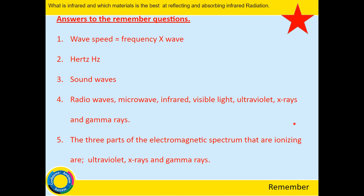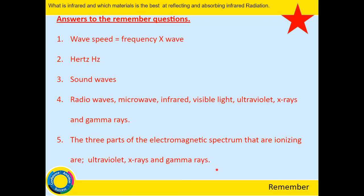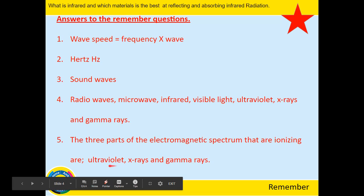Number five: the three parts of the electromagnetic spectrum that ionize are ultraviolet, X-rays, and gamma rays. Remember these three are ionizing and can cause damage to living tissue — ultraviolet radiation can cause skin cancer, and X-rays and gamma rays can cause cancer within the body.